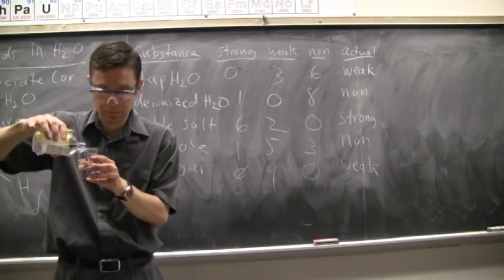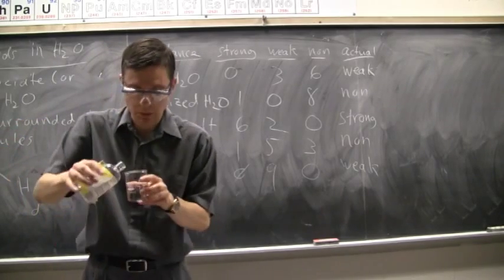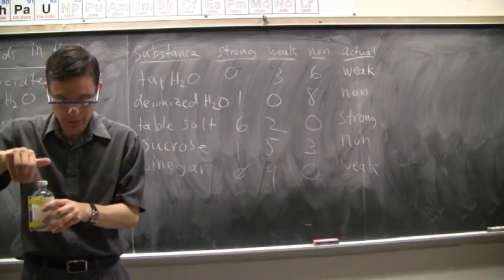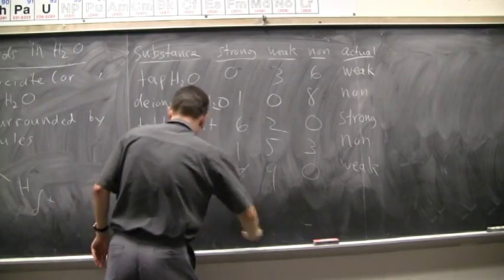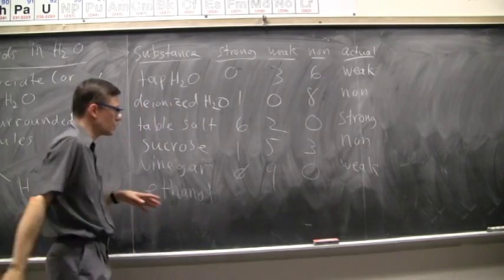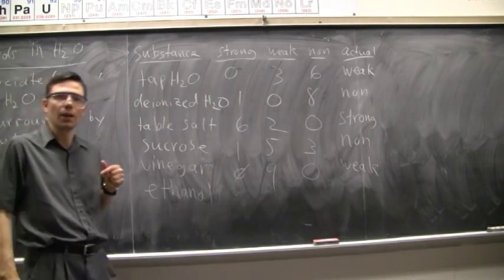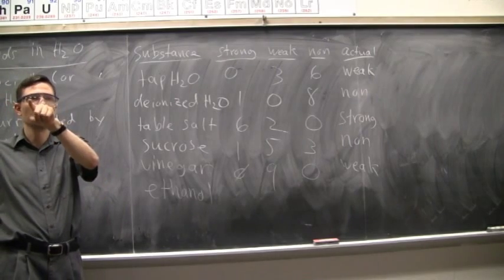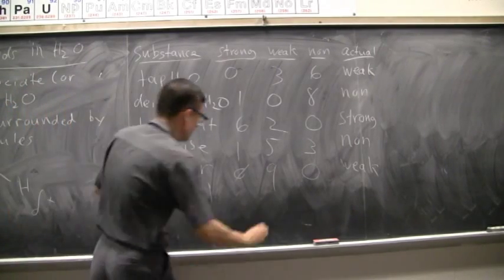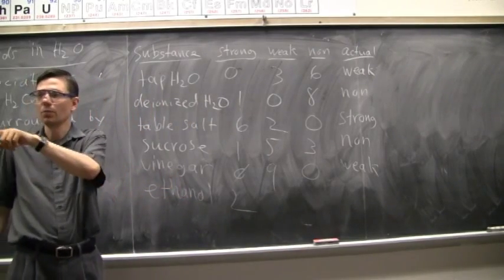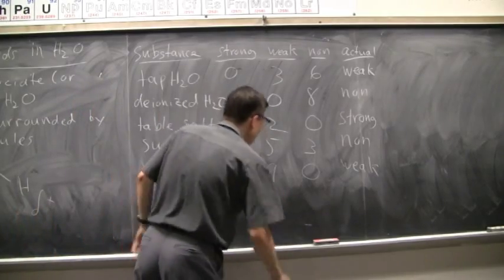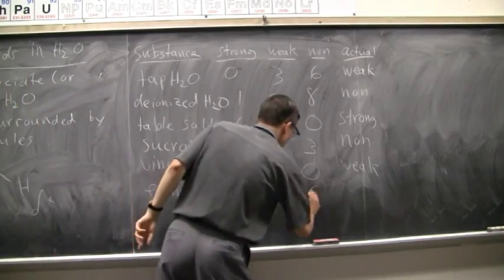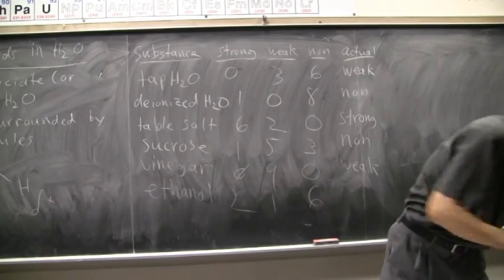And one last one. All right. This one is called ethanol. It's an alcohol. So, for our tally here, how many say strong? Okay. We got one, two, two. Weak. One. One. Okay. None. One, two, three, four, five, six.